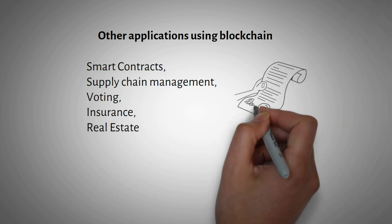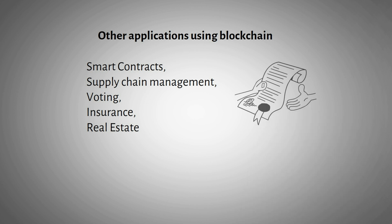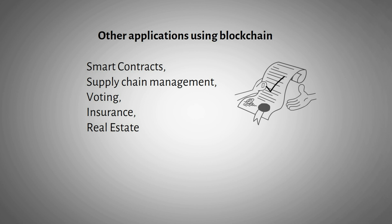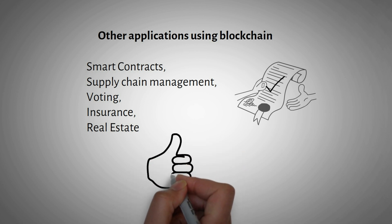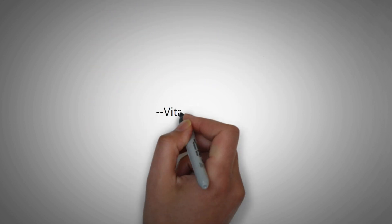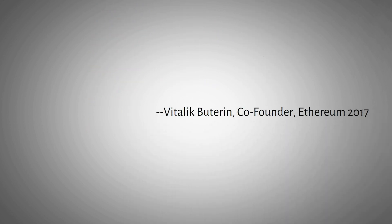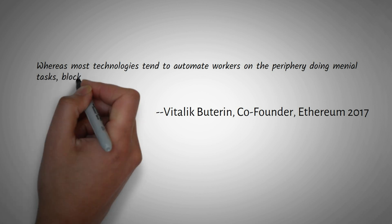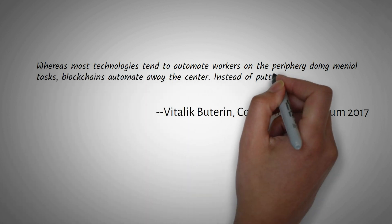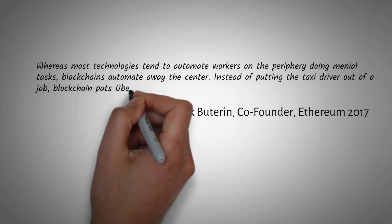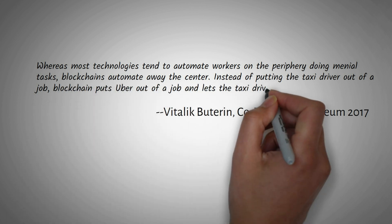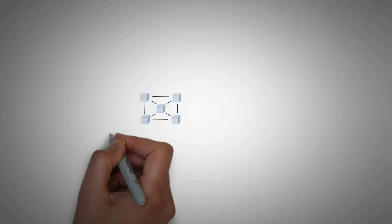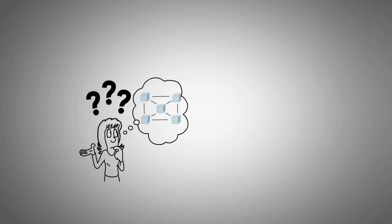Smart contracts are agreements whose terms are automatically executed when conditions are met. This automation reduces manual mistakes and increases efficiency. The code is transparent, giving the general public confidence. Ethereum founder Vitalik Buterin has said that most technologies automate and replace — blockchain can automate and replace middlemen, just as automation replaced the taxi driver job. This quote is very inspiring. Blockchain technology is truly transformative.